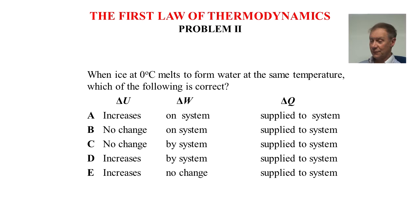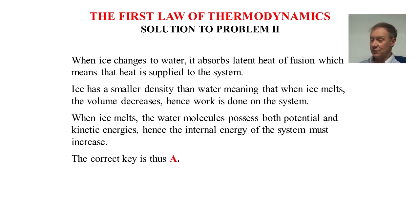The solution to problem 2. When ice changes to water, it absorbs latent heat of fusion, so heat is supplied to the system, that's delta Q. Ice has a smaller density than water, meaning that when ice melts, the volume decreases, so work is done on the system. When ice melts, the water molecules possess both potential and kinetic energies, hence the internal energy of the system must increase. So the correct solution is key A.